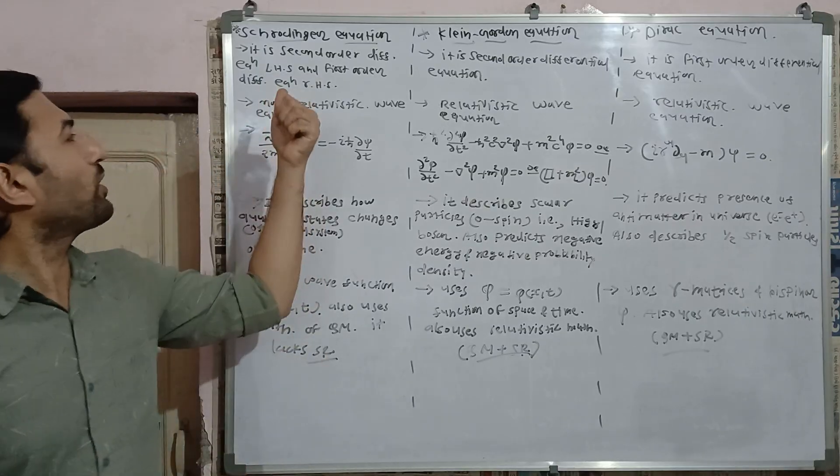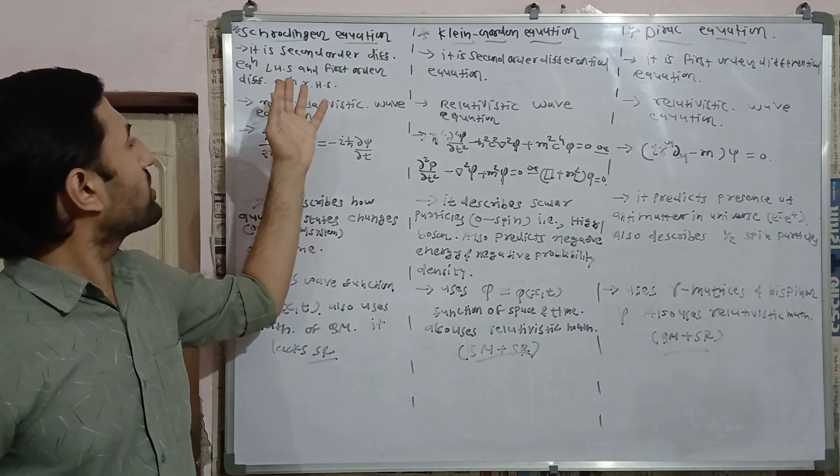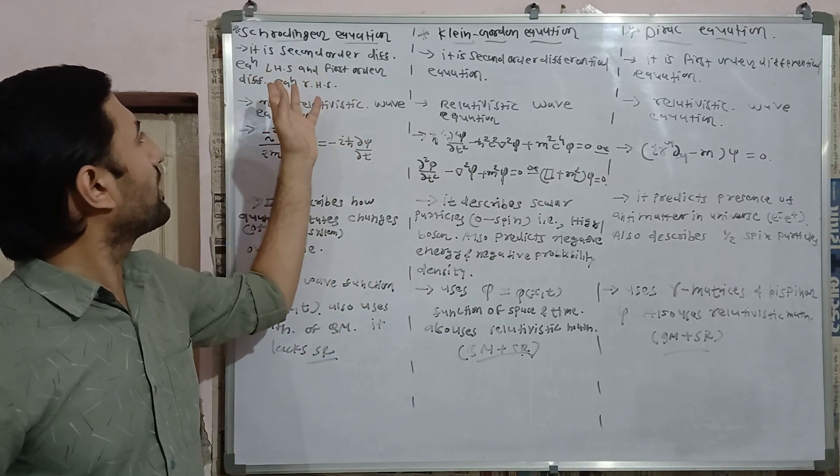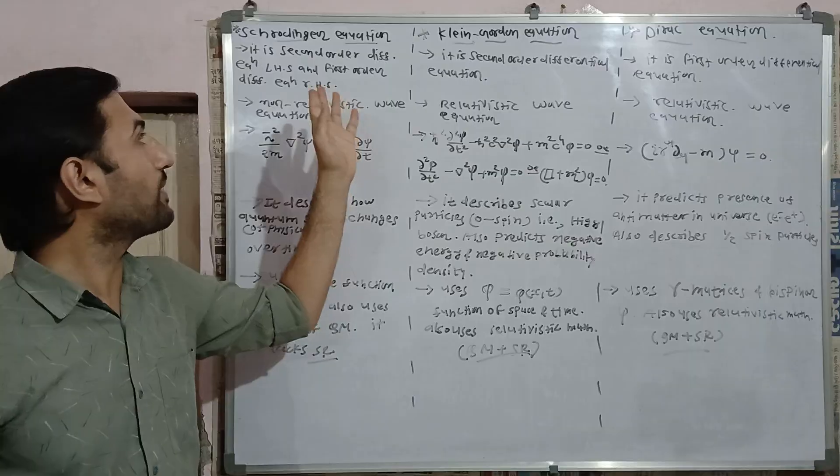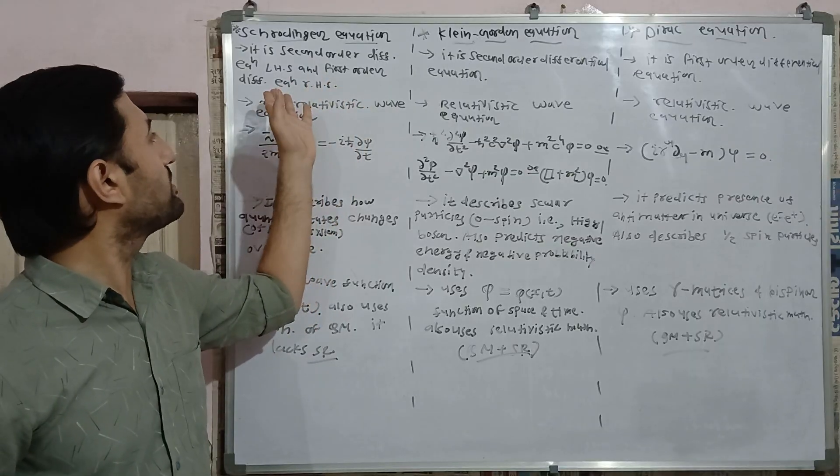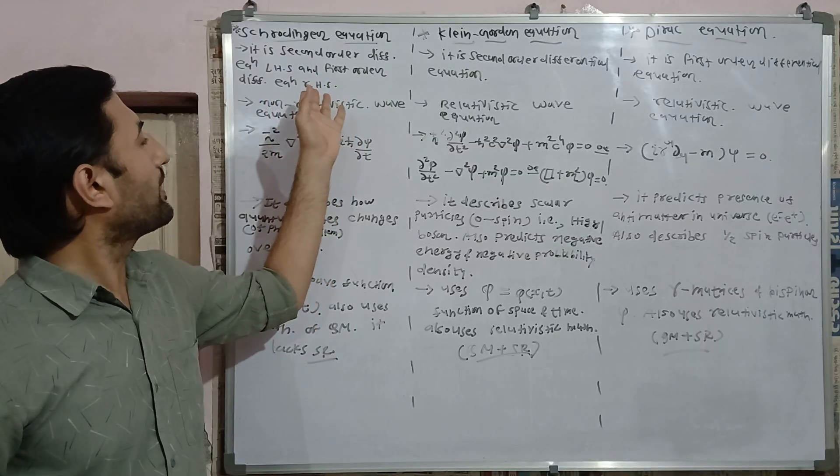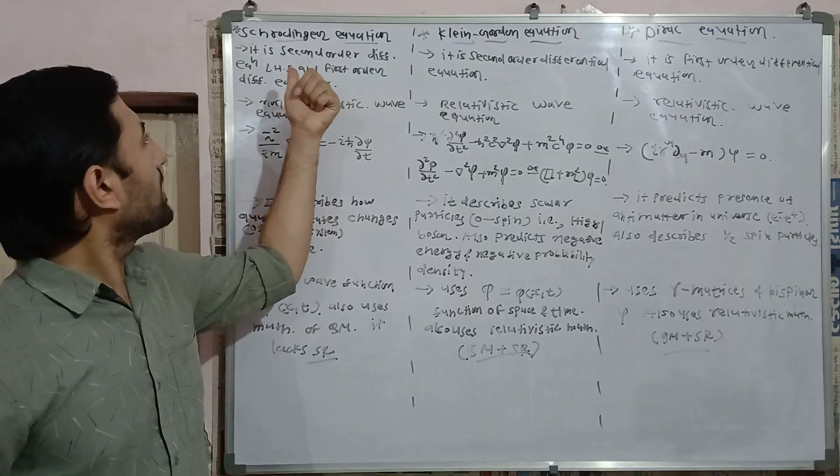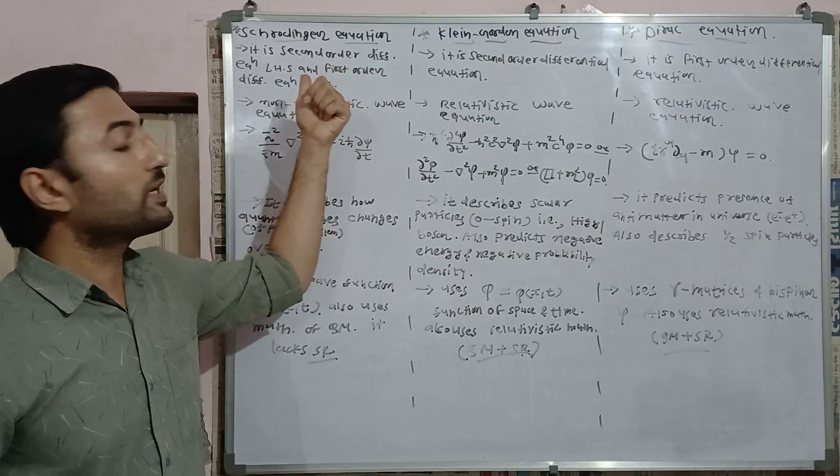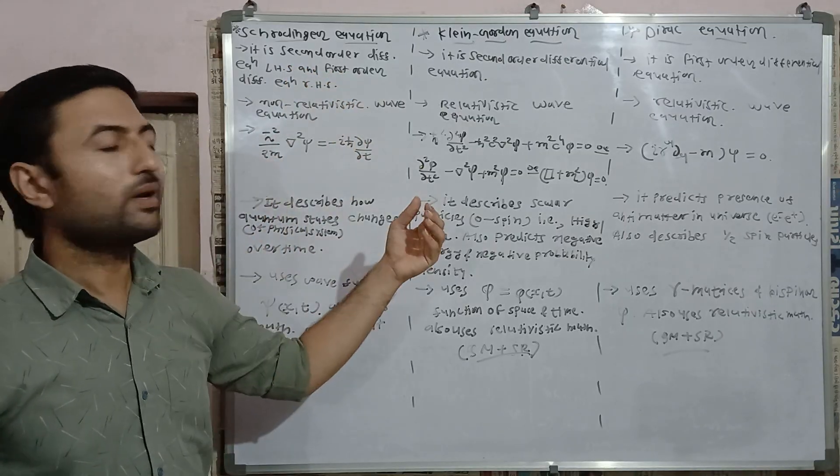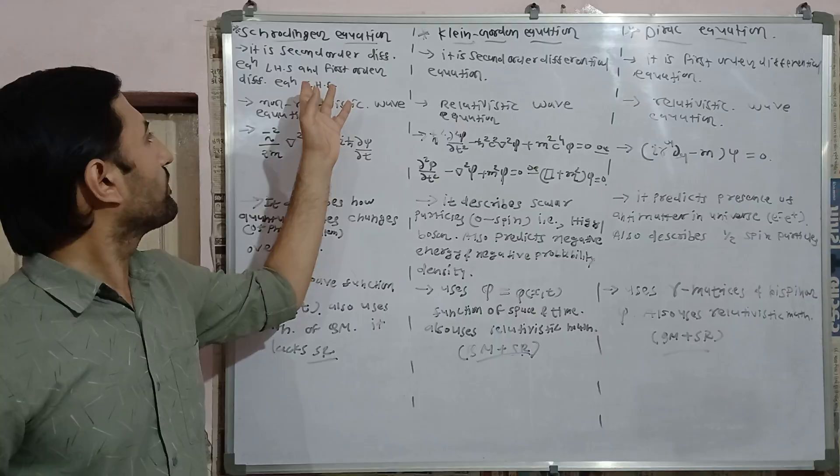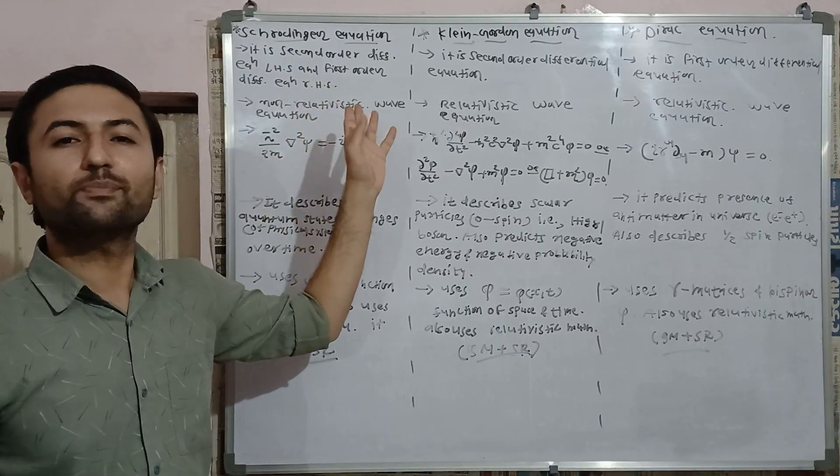First point of discrepancy is Schrodinger equation is second order differential equation at left-hand side while it is first order differential equation at right-hand side. Second order differential equation with respect to position and first order differential equation with respect to time.